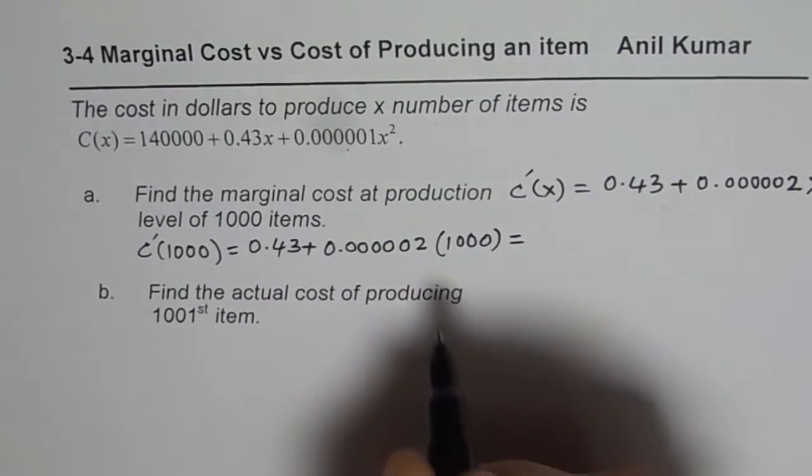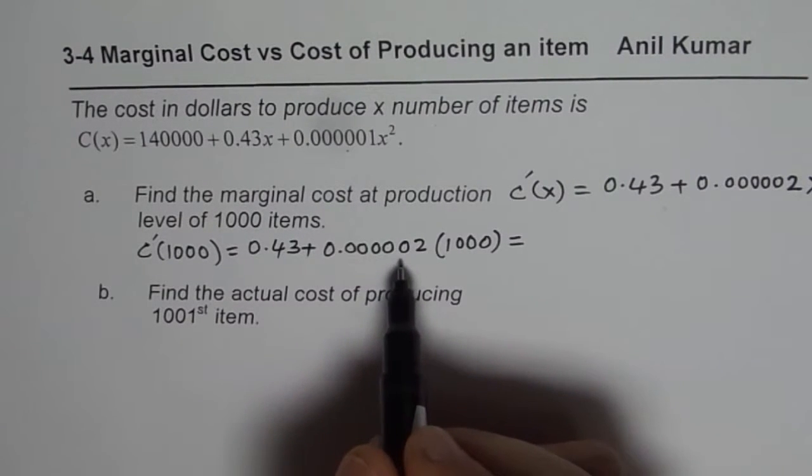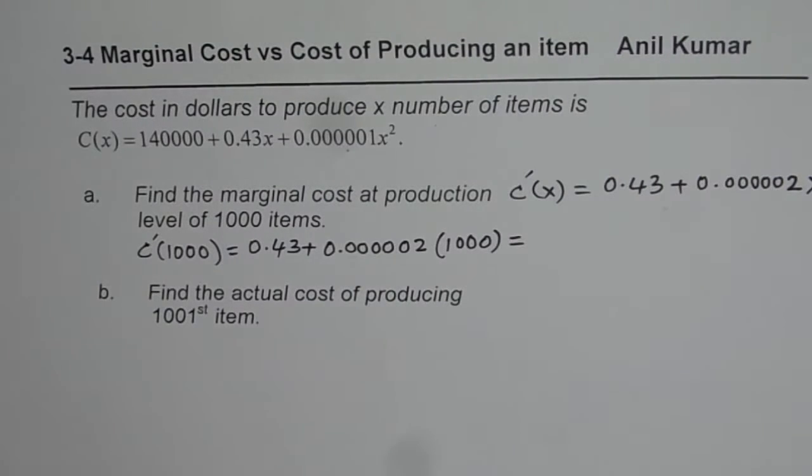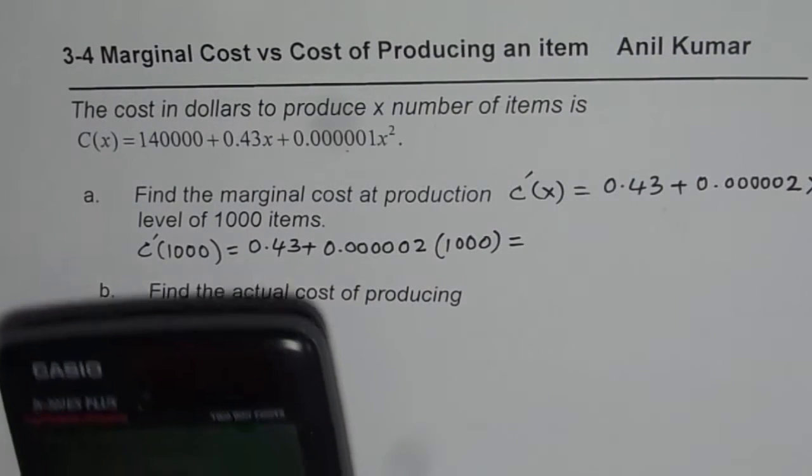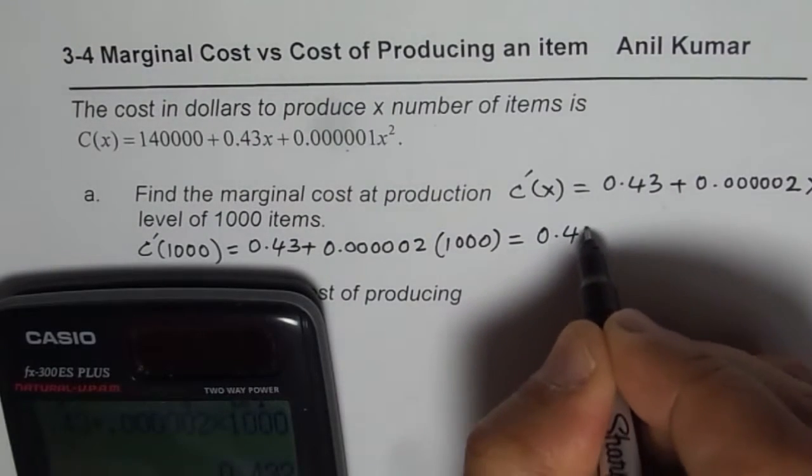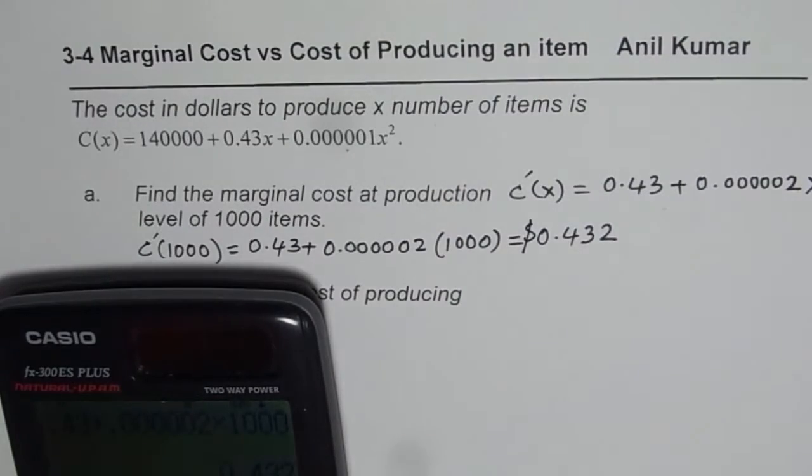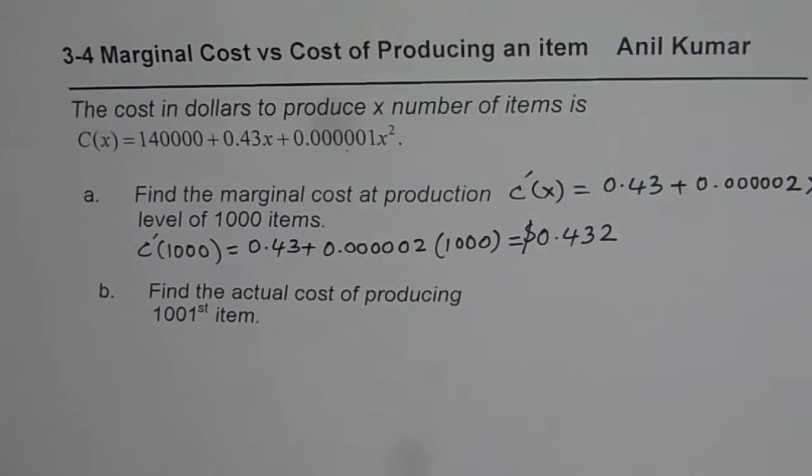So that is what it is. So when you do that, you can now use the calculator, find the answer. So we will use calculator 0.43 plus 0.000002 times 1000. So that gives you, in decimals, we will write 0.432. So that is the cost in dollars to produce 1000 items.